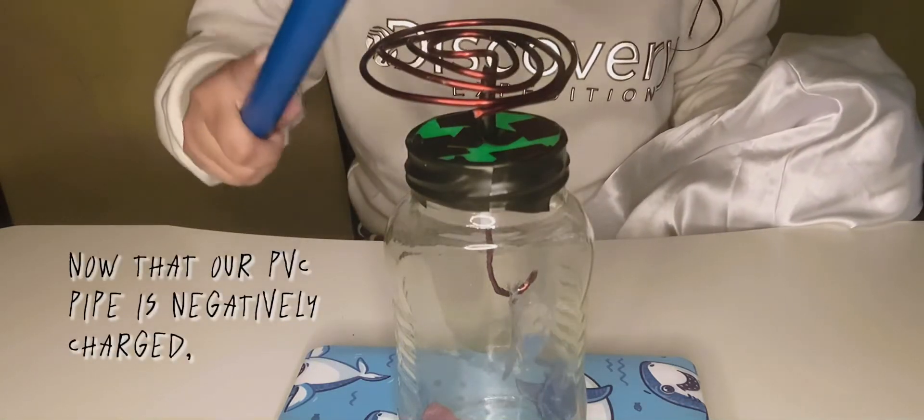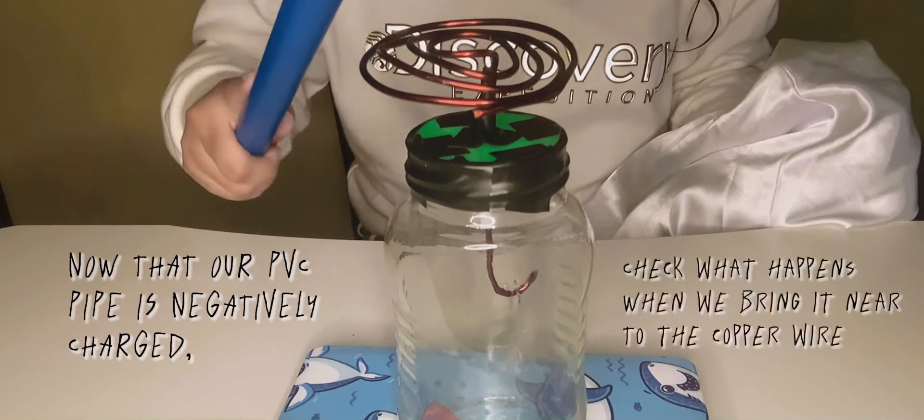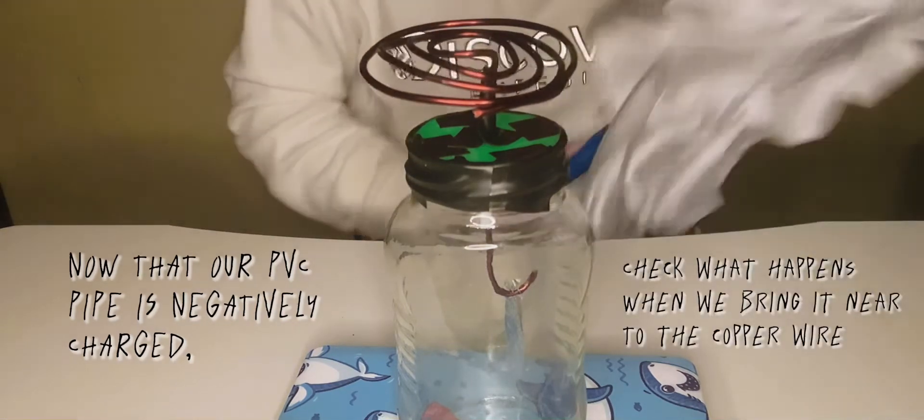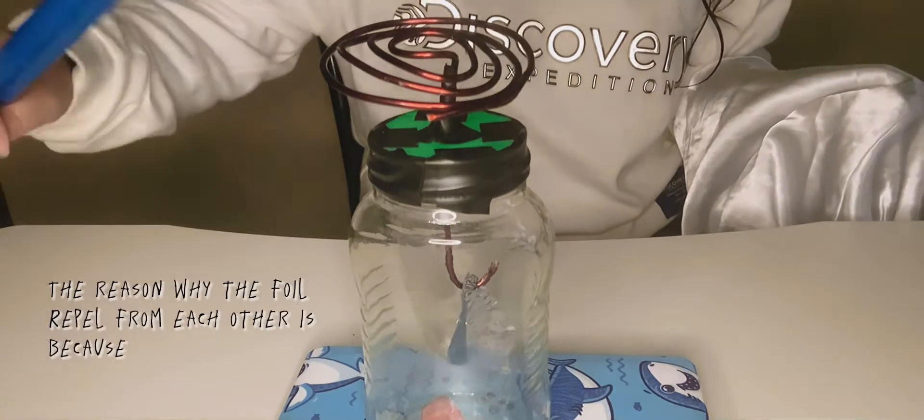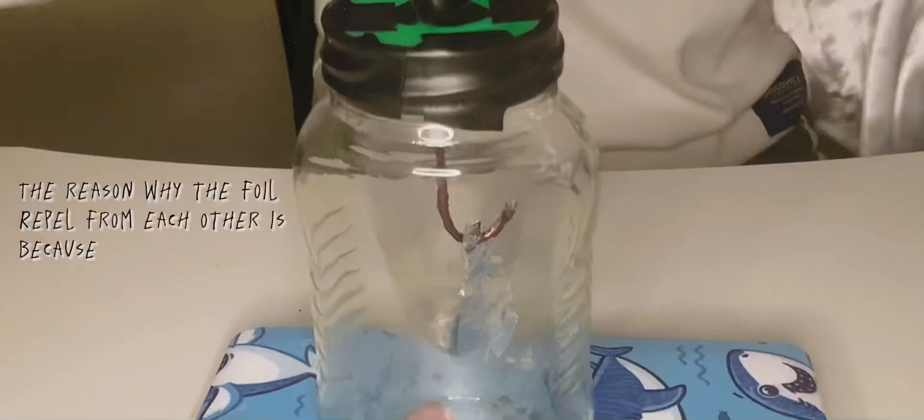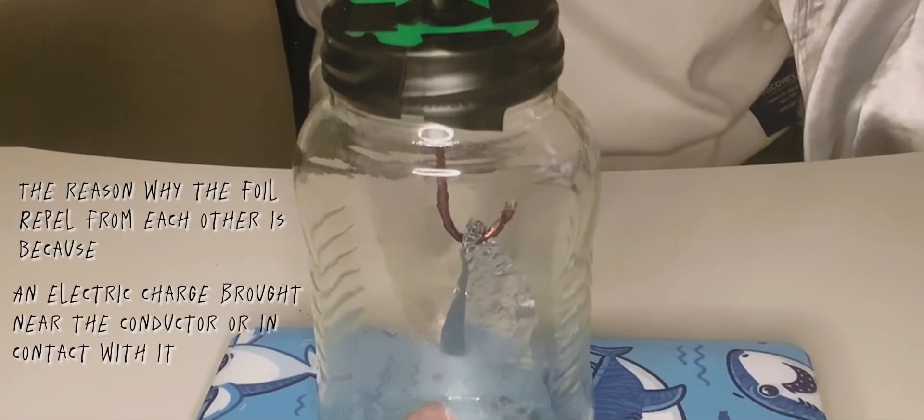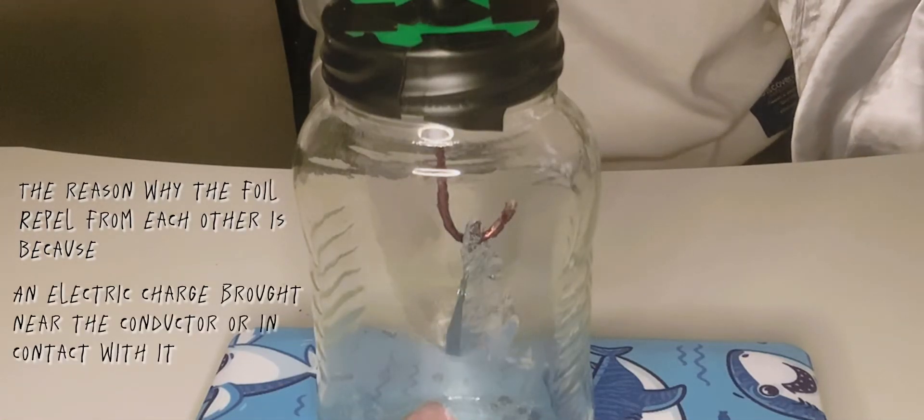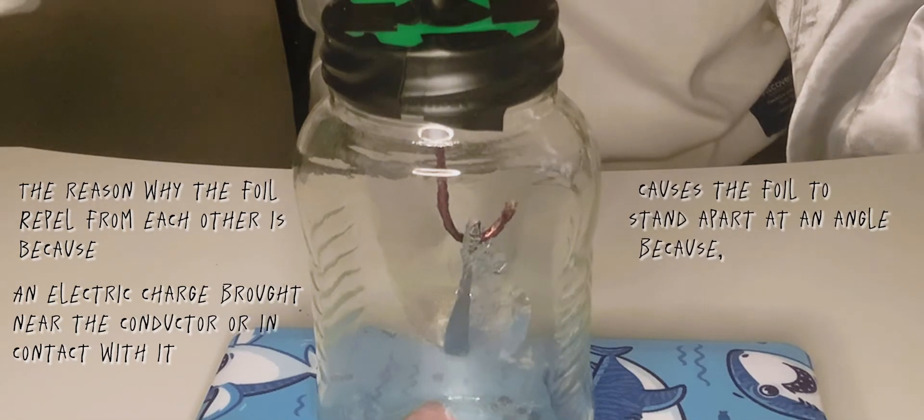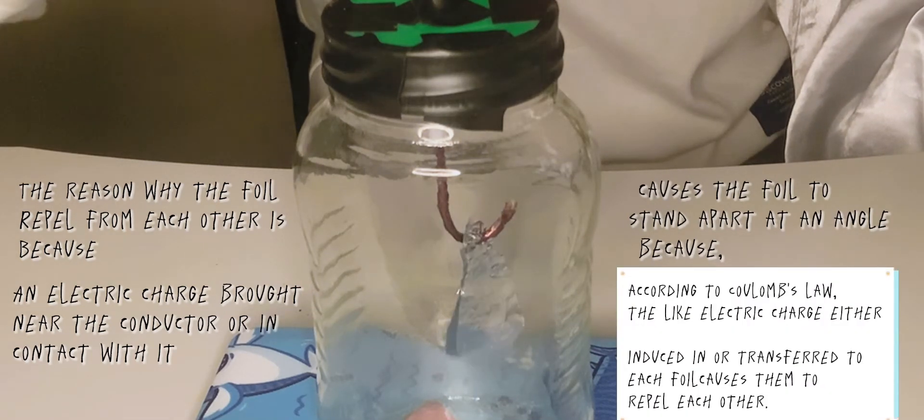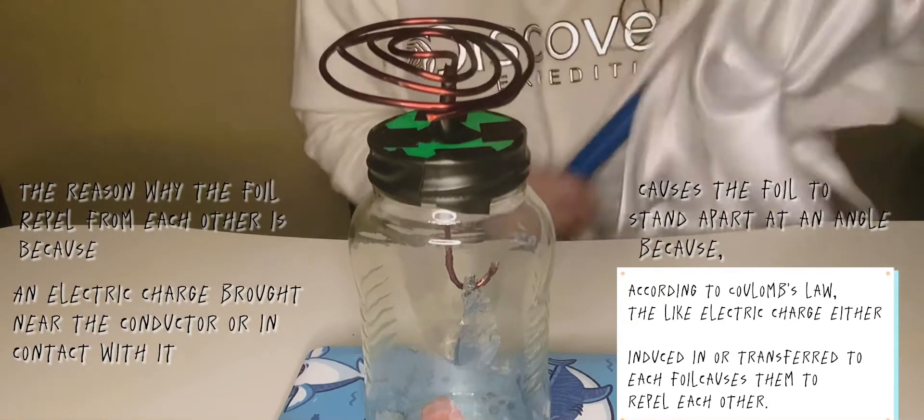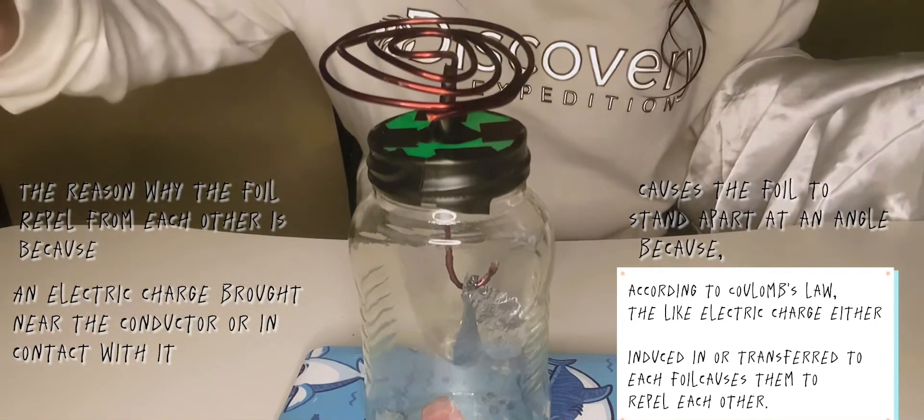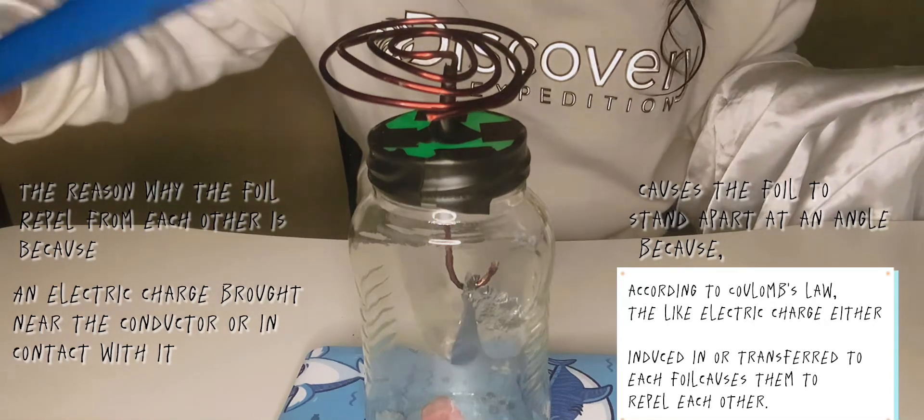Now that our PVC pipe is negatively charged, check what happens when we bring it near to the copper wire. The foil are repelling from each other. The reason why the foil repel from each other is because an electric charge brought near the conductor or in contact with it causes the foil to stand apart at an angle because according to Coulomb's law, the light electric charge either induced in or transferred to each foil causes them to repel each other.